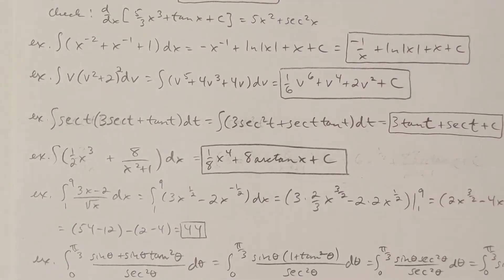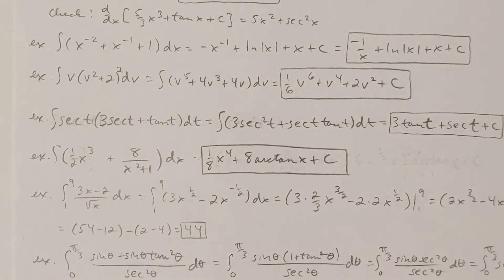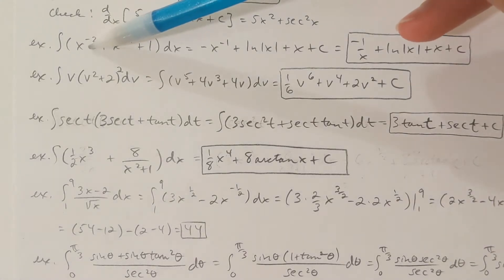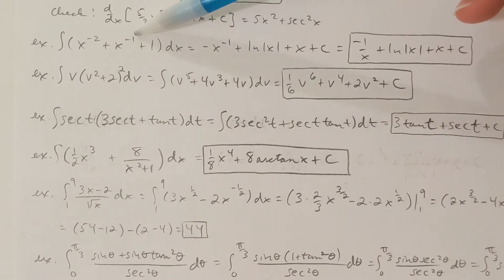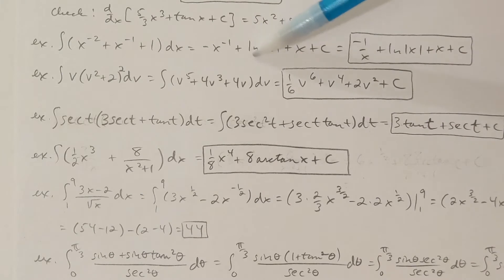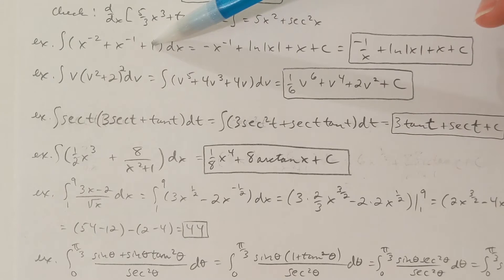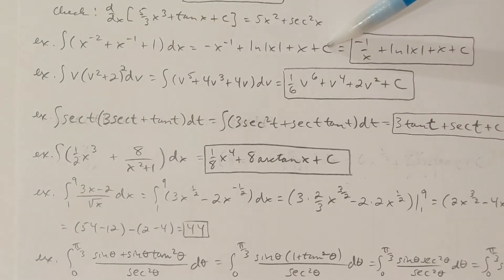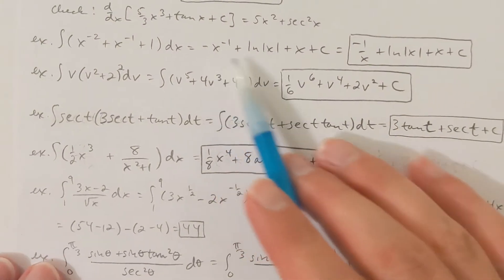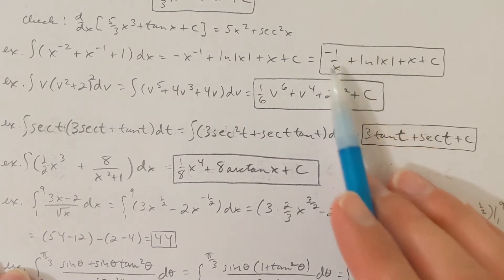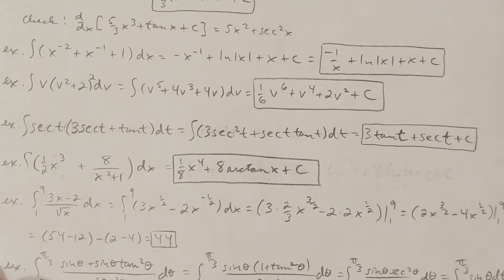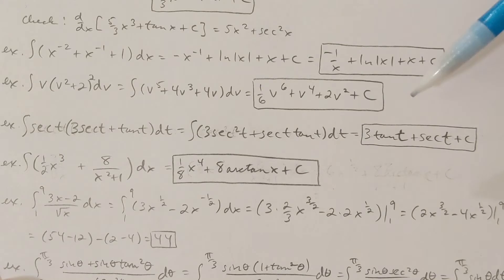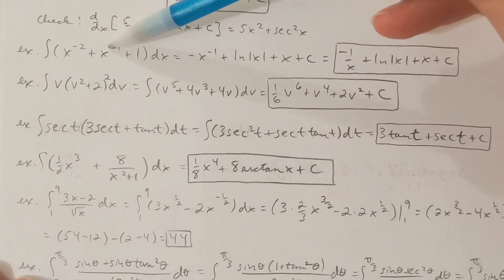Here's another one. Suppose we want to integrate x to the negative second plus x to the negative first plus 1. Using the reverse power rule, we get x to the negative 1 divided by negative 1. But be careful — x to the negative 1 is just 1 over x, and the antiderivative of 1 over x is the natural log of the absolute value of x. The antiderivative of 1 is x. Be sure to include the plus c. Negative x to the negative 1 is the same as negative 1 over x. You'll notice absolute value bars inside the ln function — those must be there. If you don't have absolute value bars, it's a wrong answer, because we can't take the log of a negative, and it's understood x can't be 0 since we can't divide by 0.